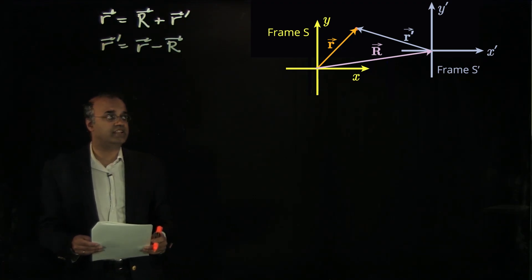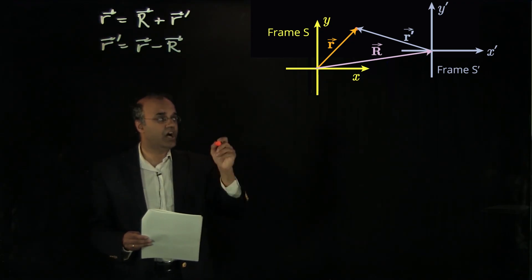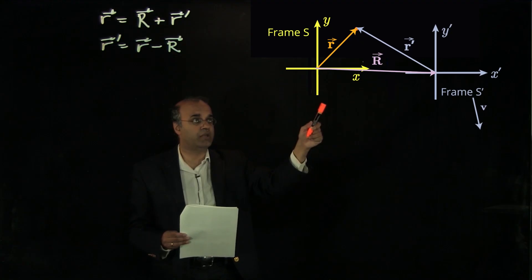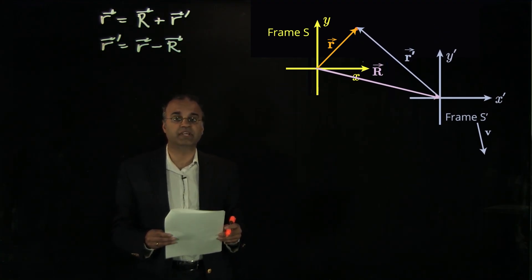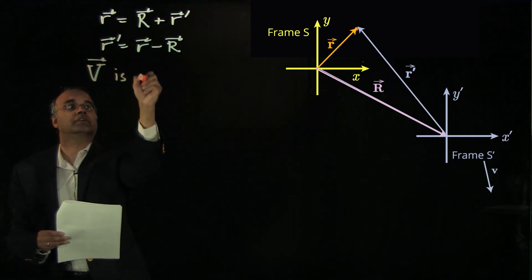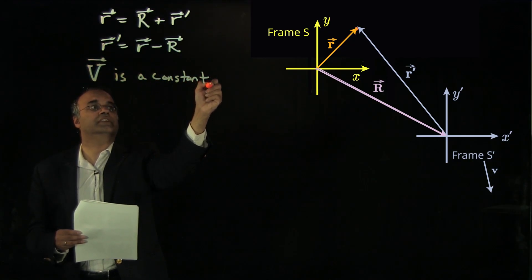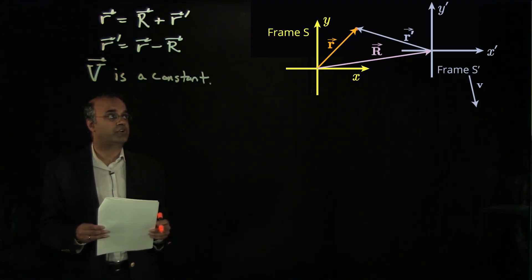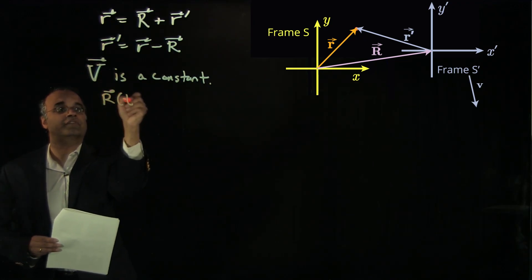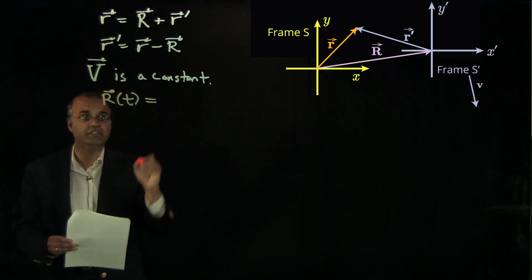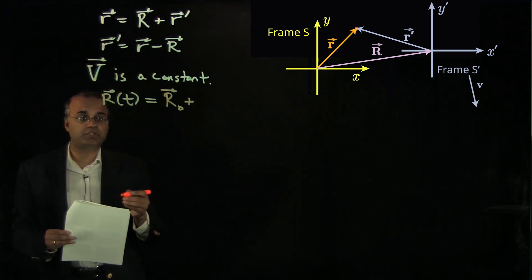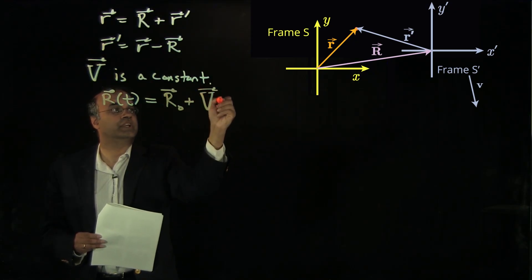Now let's add a further complication and assume that observer S prime is not just at a different location from observer S, but is moving at constant velocity relative to frame S. So frame S prime is moving at constant velocity V with respect to frame S, where V is a constant vector. In that case, the offset R of observer S prime relative to observer S is a function of time, given by R(t) = R₀ + Vt, where R₀ is the offset at time zero and Vt is the elapsed motion due to the constant velocity.